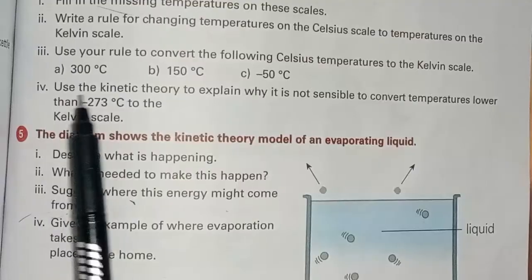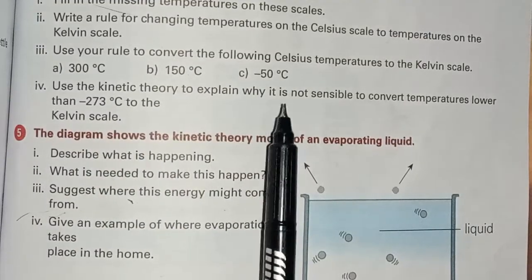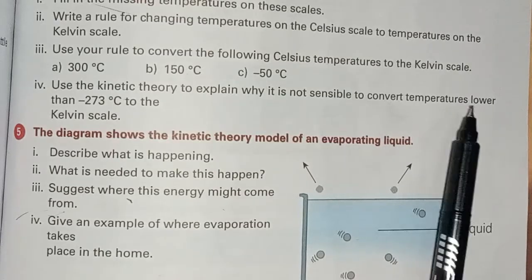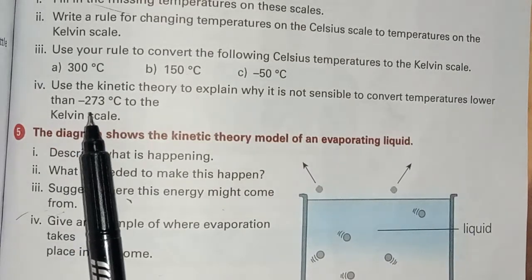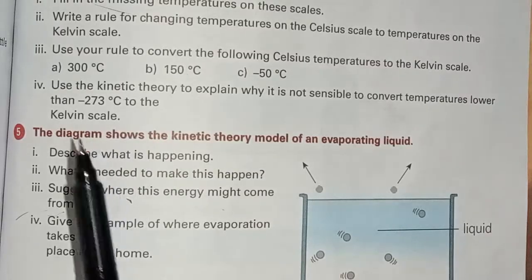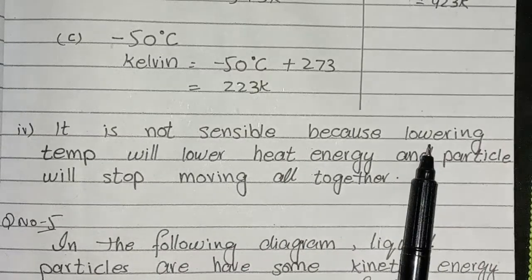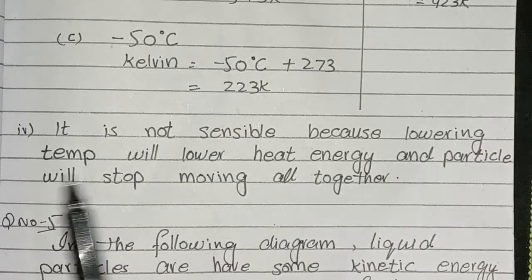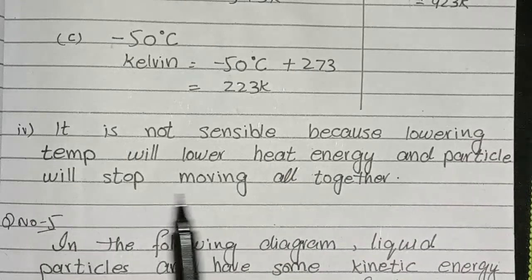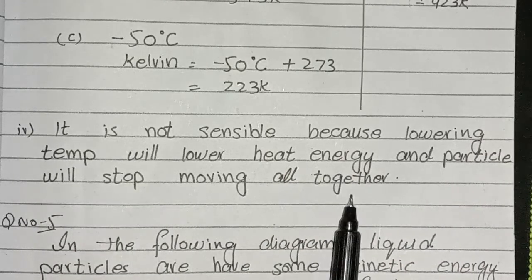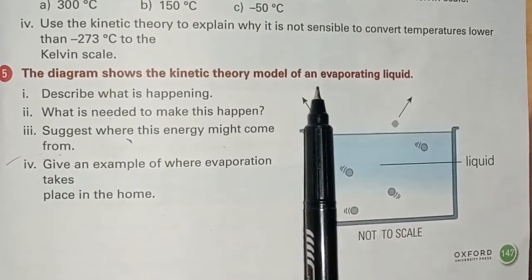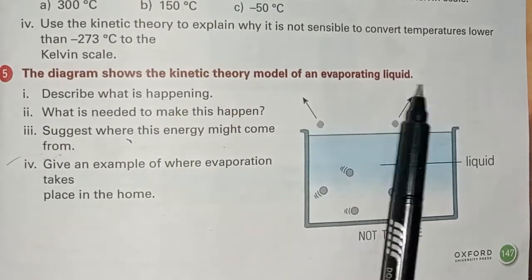Use the kinetic theory to explain why it is not sensible to convert temperatures lower than minus 273 degrees Celsius to the Kelvin scale. Answer: it is not sensible because lowering temperature will lower heat energy and particles will stop moving altogether.